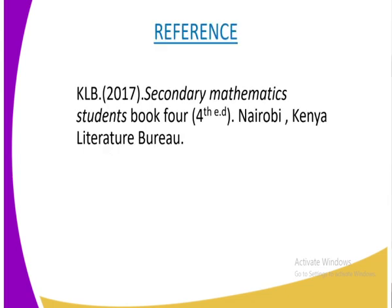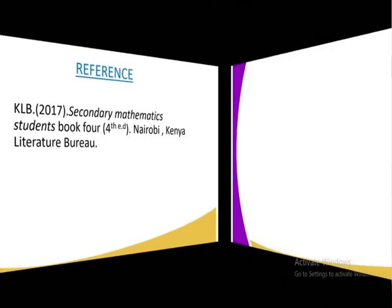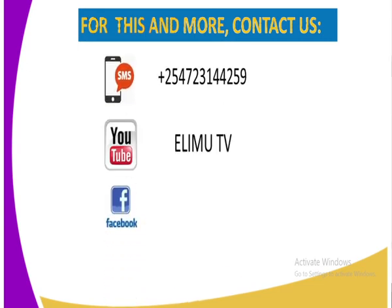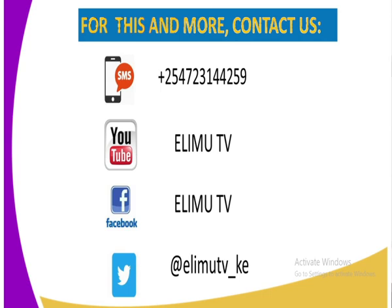And to get more information in this lesson, you can refer to KLB Secondary Mathematics Student Book 4, which is the fourth edition, Nairobi, and it has been certified by the Kenya Literature Bureau. And to get this mathematics lesson and many more, you can send us an SMS to the number that is on our screen, or you subscribe to both our YouTube and Facebook page, which are both Elimu TV. Or your Twitter is at Elimu TV underscore KE. Let us subscribe to all these channels and we shall enjoy more of our mathematics lessons. Thank you.